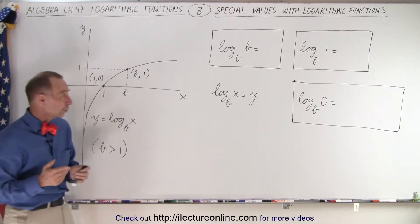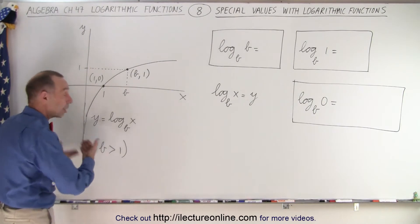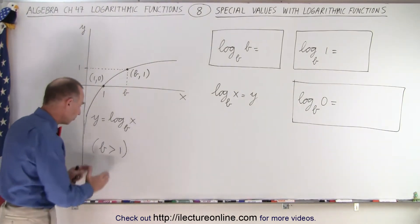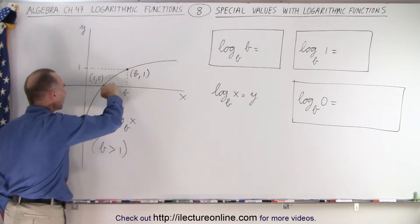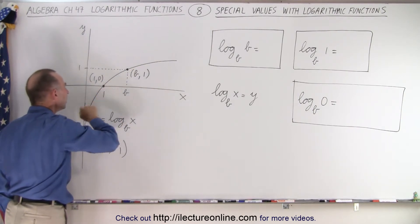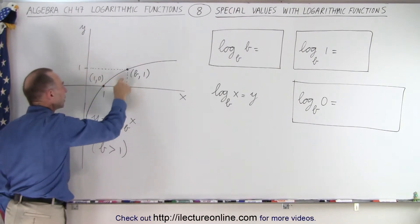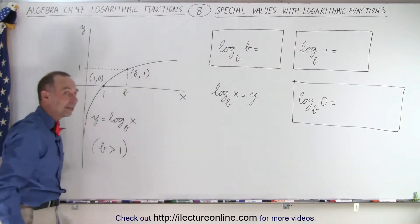What are those two points? Well, if we graph a typical logarithmic function where the base is greater than 1, it looks like this. It goes to the x-axis when x equals 1, and it reaches a value for y when x equals b, the value of the base.